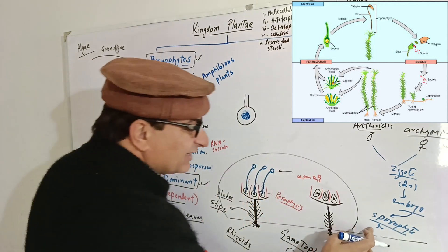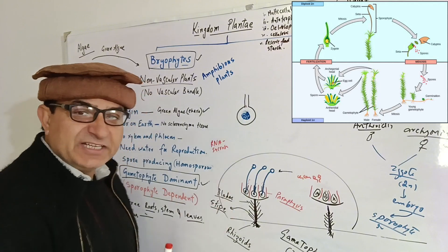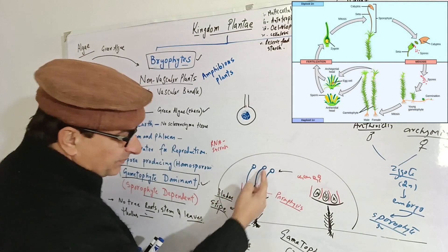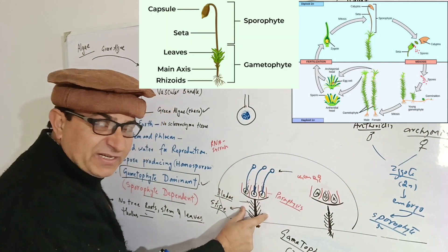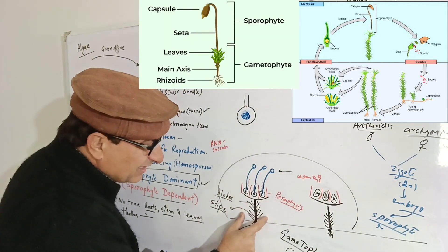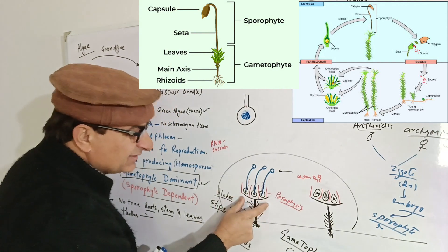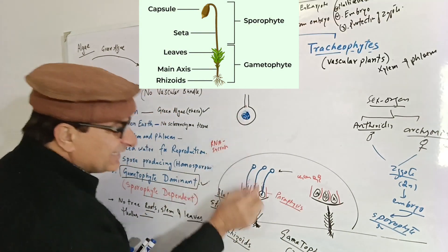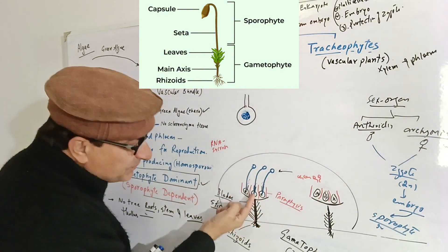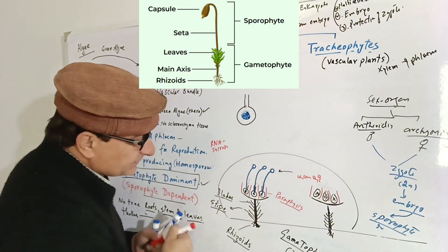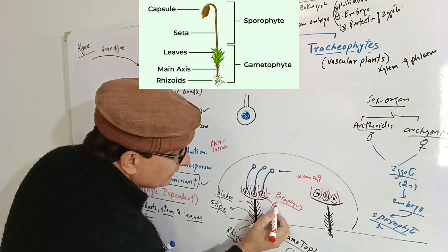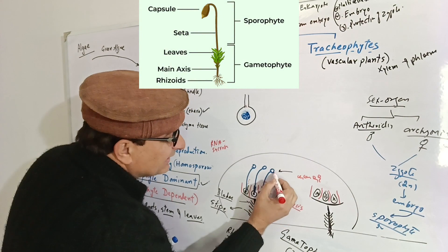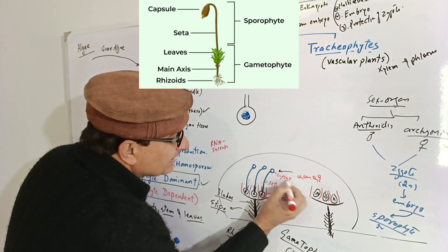The sporophyte consists of three parts: foot, seta, and capsule (sporogonium). This sporophyte is dependent on the gametophyte for nourishment, because the photosynthesis-performing part is the gametophyte. The gametophyte produces sex organs, fertilization results in formation of zygote, zygote develops into embryo, and embryo develops into a sporophyte. This sporophyte develops while remaining inside the archegonia.